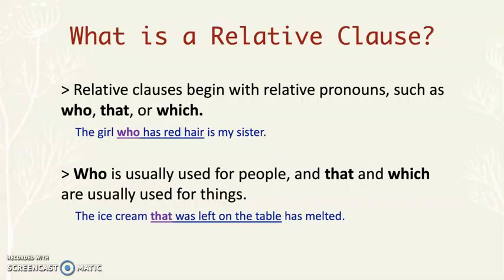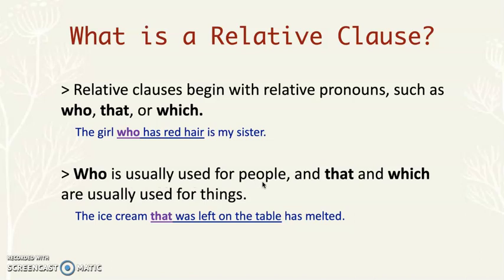First of all, what is a relative clause? Relative clauses begin with relative pronouns such as who, that, or which. For example, 'the girl who has red hair is my sister.' The underlined part is the relative clause. Who is the relative pronoun, and this whole relative clause is telling us more about the girl. Who is usually used for people, that's why we're using who here because we're talking about a girl.